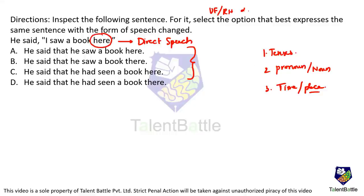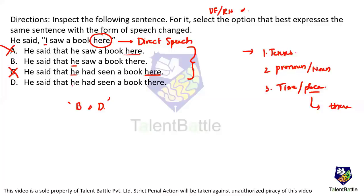The word 'here' in direct speech must change to 'there' in indirect speech. This immediately eliminates option A (which retains 'here') and option C. We are left with options B and D. The pronoun 'I' changes to 'he' — that part is covered in both remaining options. Now we check the tense.